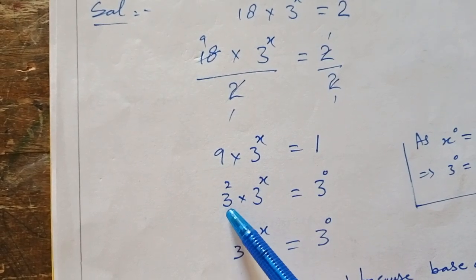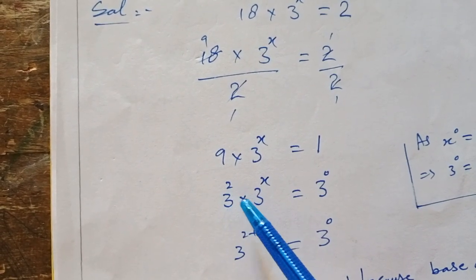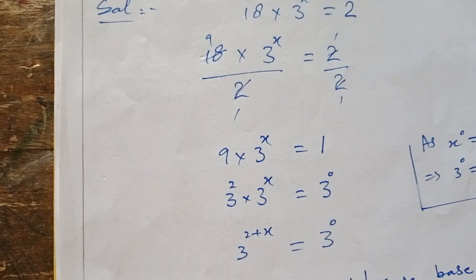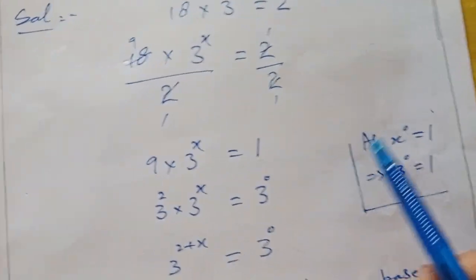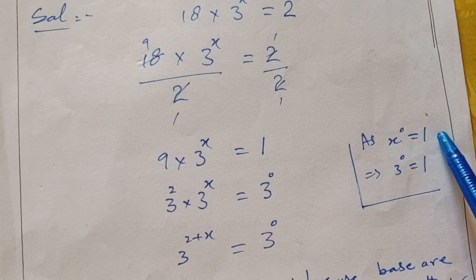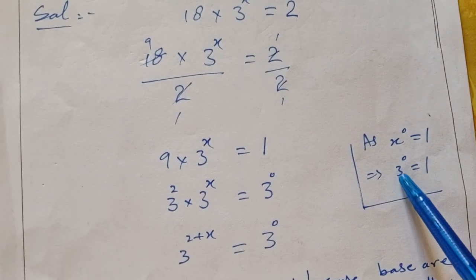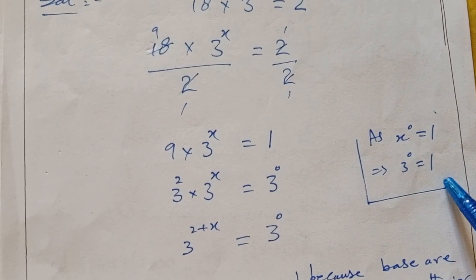We write 9 as 3 to the power 2 multiplied with 3 to the power x is equal to 3 to the power 0. As we know, x to the power 0 is equal to 1. So we write 3 to the power 0 is equal to 1.